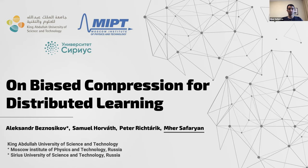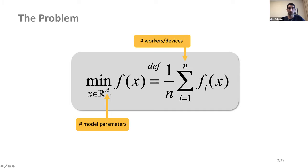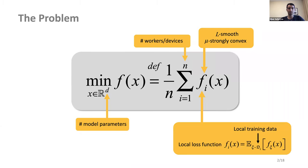Let's start with the optimization problem we are going to solve. The problem is this finite sum minimization where the model parameters are d-dimensional, the number of workers is n. We assume there are n workers or devices that we can use in parallel, with strong convexity and smoothness assumptions on the individual loss functions. Each node has its own data stored locally and only accesses data d_i or functions f_i.